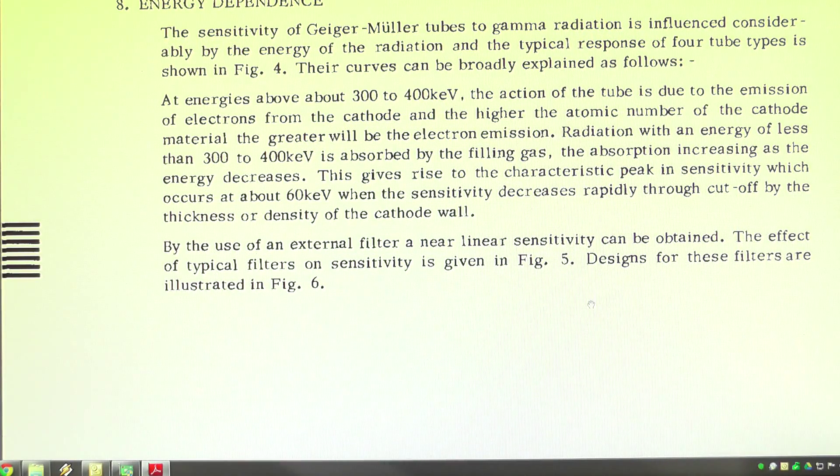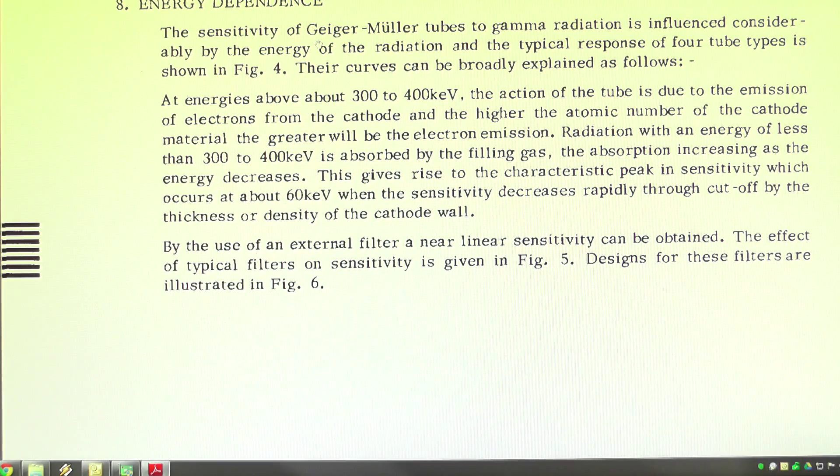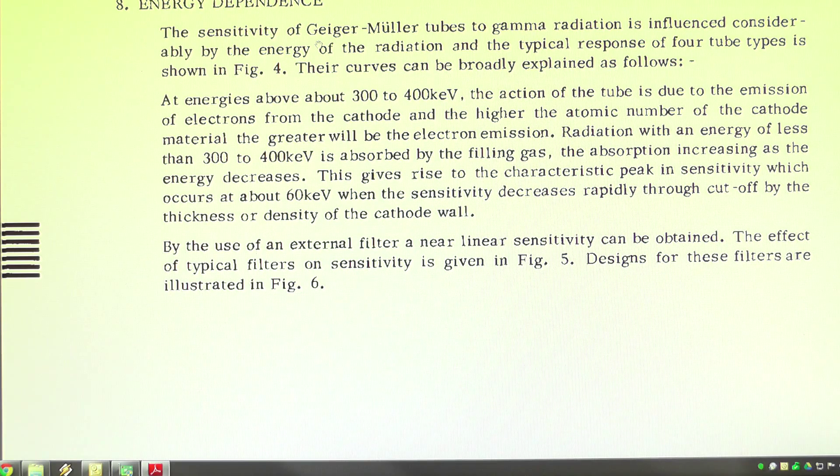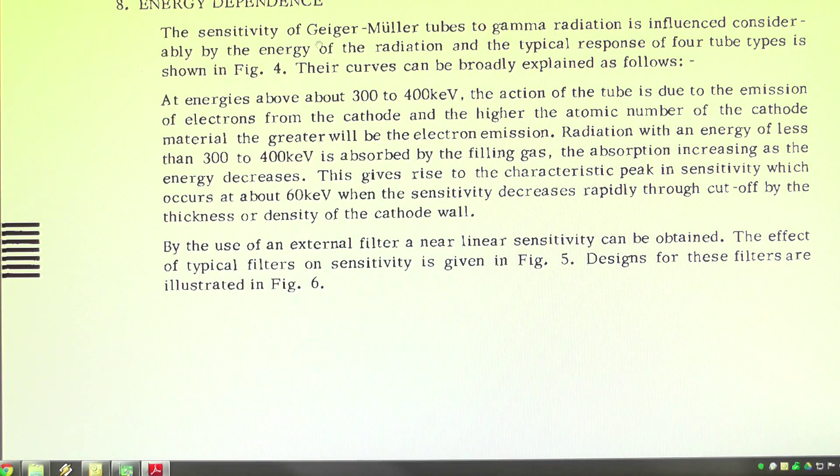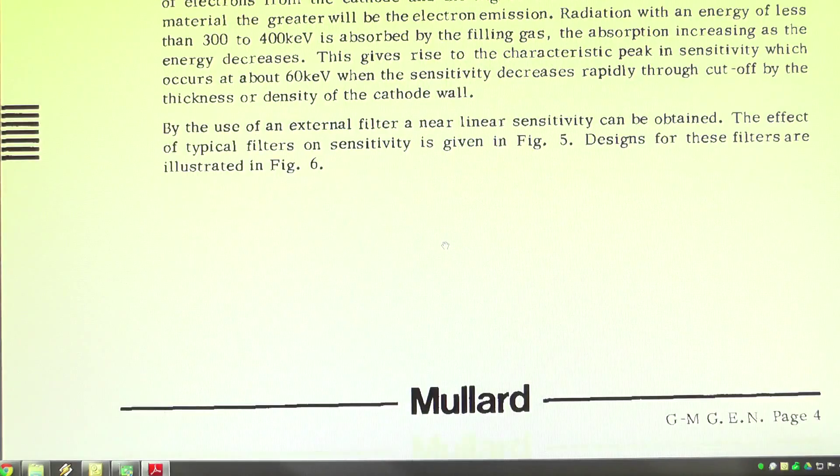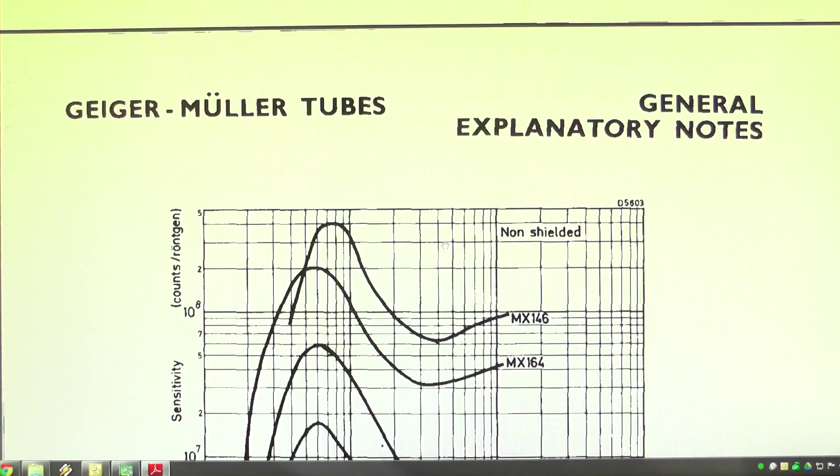Now this is the section that I found in this document. It's called energy dependence. And basically what it's saying is at the lower end of the energy of the particles entering the tube, you get a greater sensitivity to those particular particles because they are absorbed by the filling gas. And above a certain energy, the action of the tube is due to the emission of electrons from the cathode. So basically what it's saying is that lower energy particles will have a higher sensitivity.